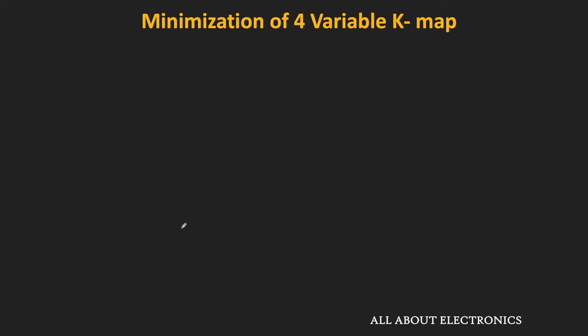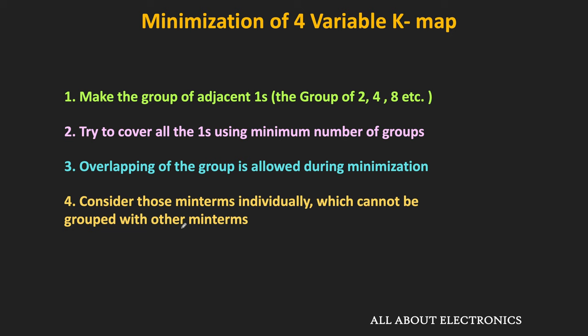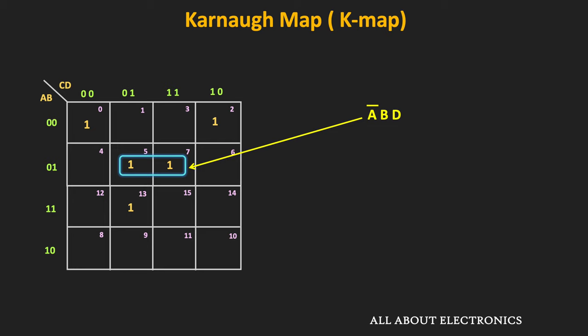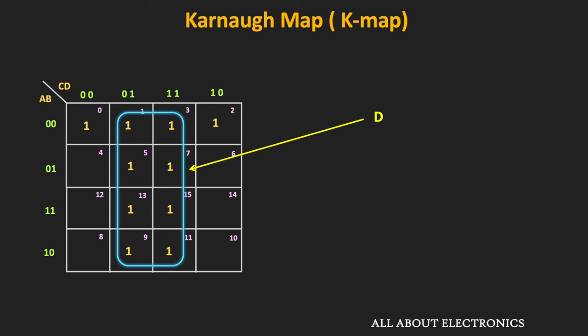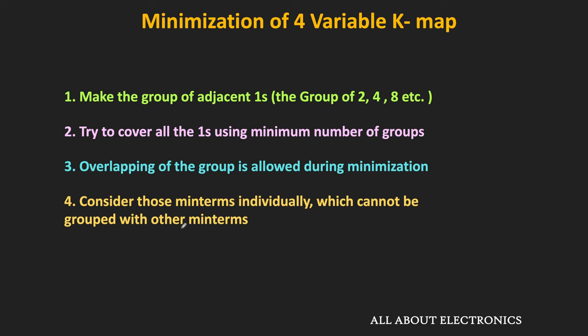Now let us see how to reduce a Boolean function using the kmap. The rules are similar to the 2 and 3-variable kmap. First, make groups of 1s in powers of 2. Whenever making a group, try to aim for bigger groups so that the number of variables in each product term is reduced. For a 4-variable kmap, a group of 2 gives a product term with 3 variables; a group of 4 gives 2 variables; and a group of 8 gives 1 variable. By making bigger groups, we reduce the number of variables after minimization. Then try to cover all 1s using the minimum number of groups to reduce the number of product terms.